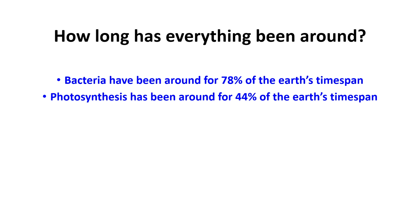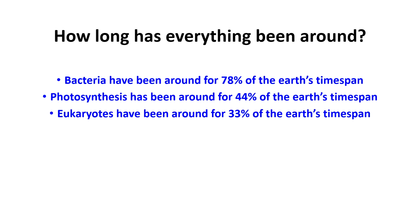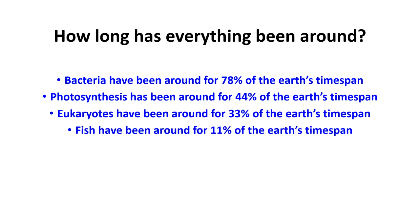Photosynthesis is one of the most significant things that living things have ever come up with, but it's been around for less than half of the Earth's time span. The cells that make up our body — eukaryotic cells — have only been around for about a third of the Earth's time span. And fish have only been around for about 11% of that time.